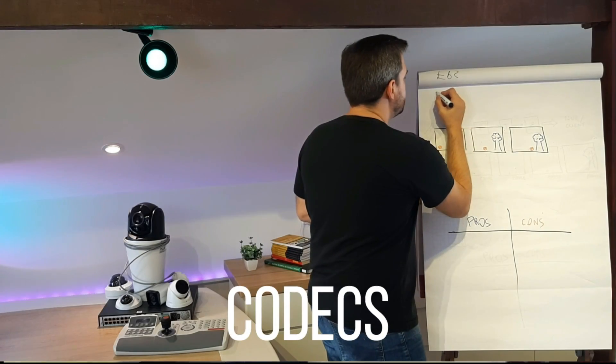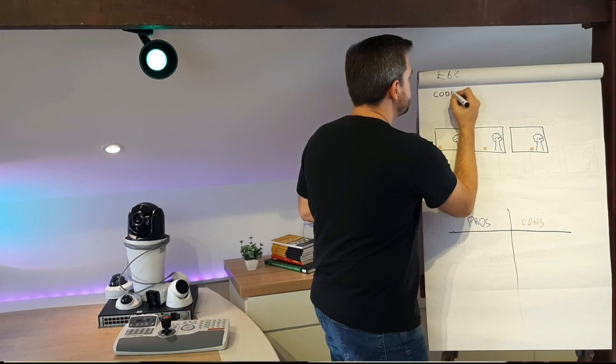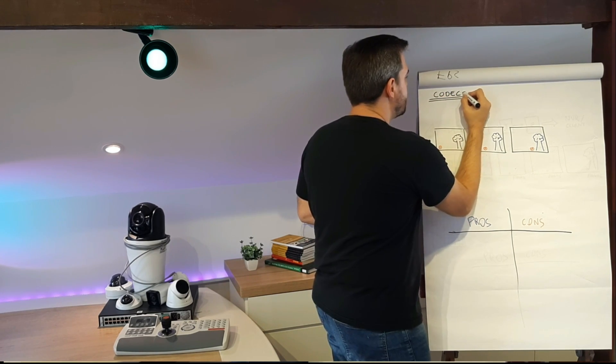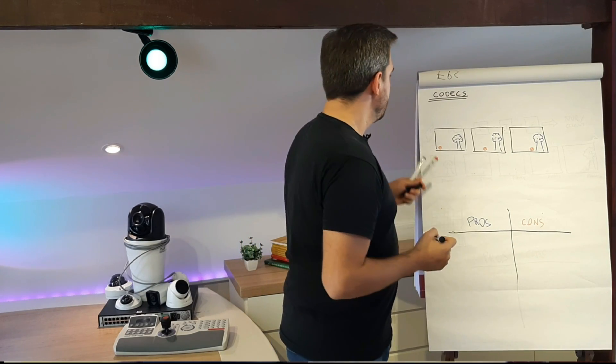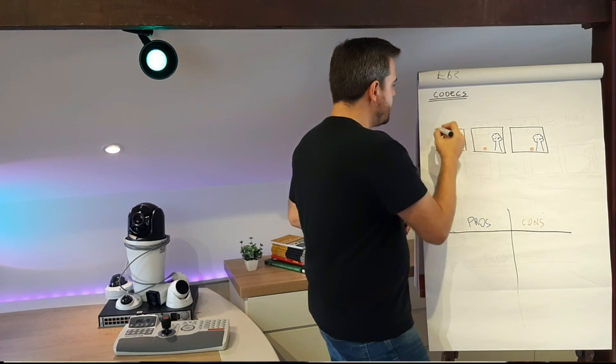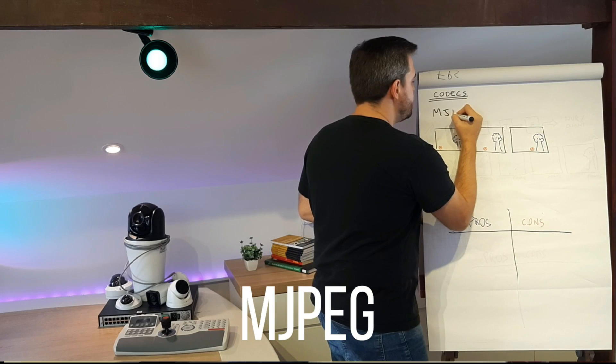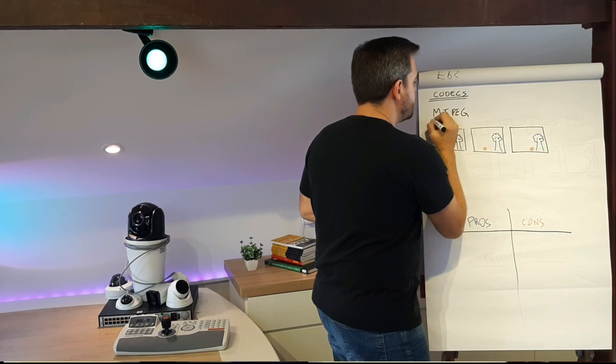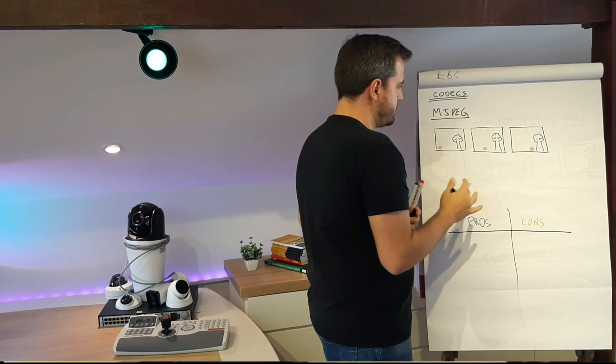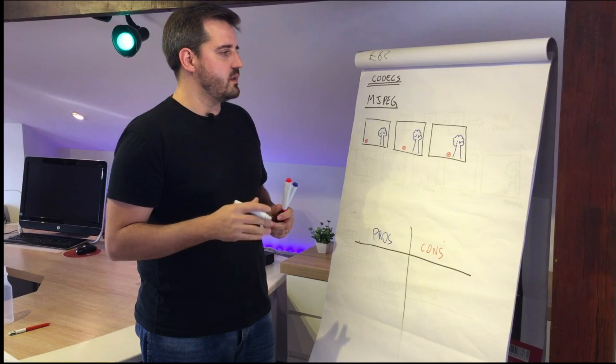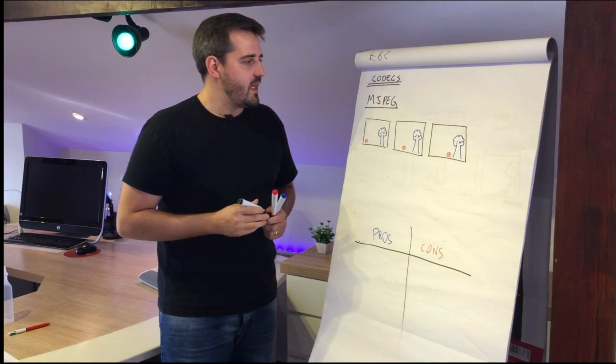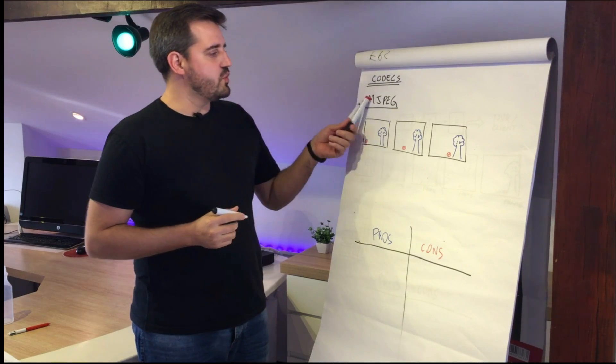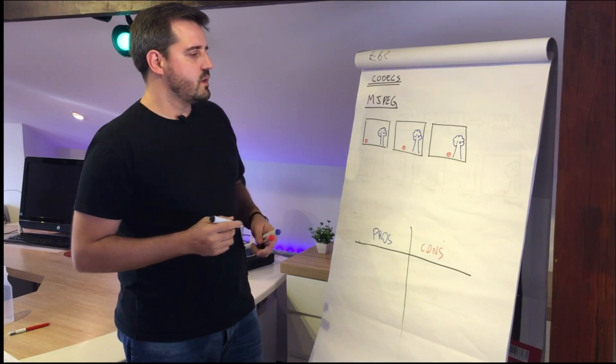So that's a very important codec, a very important part of this stream. I will start here with MJPEG. MJPEG was created in the mid-90s, it's a very old one, and basically it's a Motion JPEG. We are talking about a group of pictures compressed and sent to the NVR or to the client.